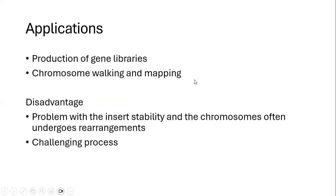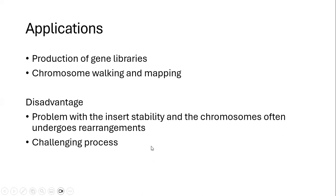Coming to the applications, yeast artificial chromosomes are used for preparing gene libraries and can be used for chromosome walking and mapping reactions. One disadvantage with the use of yeast artificial chromosomes is instability of the insert, because the chromosomes often undergo rearrangement reactions, especially due to their large size. The overall process is also quite challenging. However, electroporation helps simplify the process, as it can force large DNA fragments or constructs into the host cell.